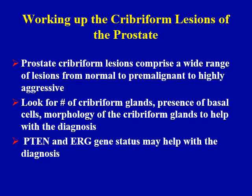In summary, prostate cribriform lesions comprise a wide range of lesions from normal to pre-malignant to highly aggressive lesions such as intraductal carcinoma. When you are looking at atypical cribriform lesions, look for the number of cribriform glands, presence of basal cells, and morphology of the cribriform glands to help with the diagnosis. PTEN and ERG gene fusion studies may also help with the diagnosis.